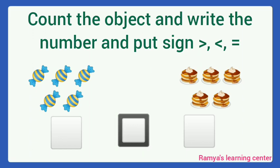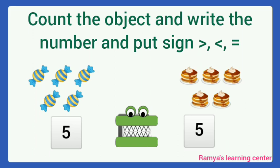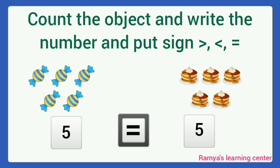Next, how many candies are here? 1, 2, 3, 4, 5. Then, how many cakes are here? 1, 2, 3, 4, 5. Here, the number of candies and number of cakes are equal. So, the alligator mouth remains closed. We put the same symbol. Read: 5 equal to 5.